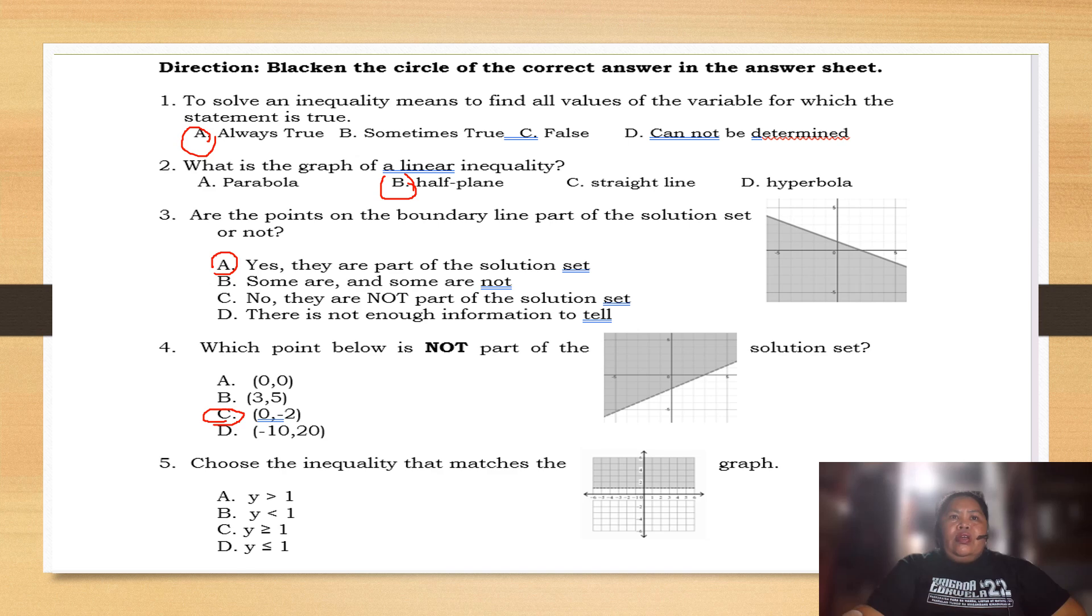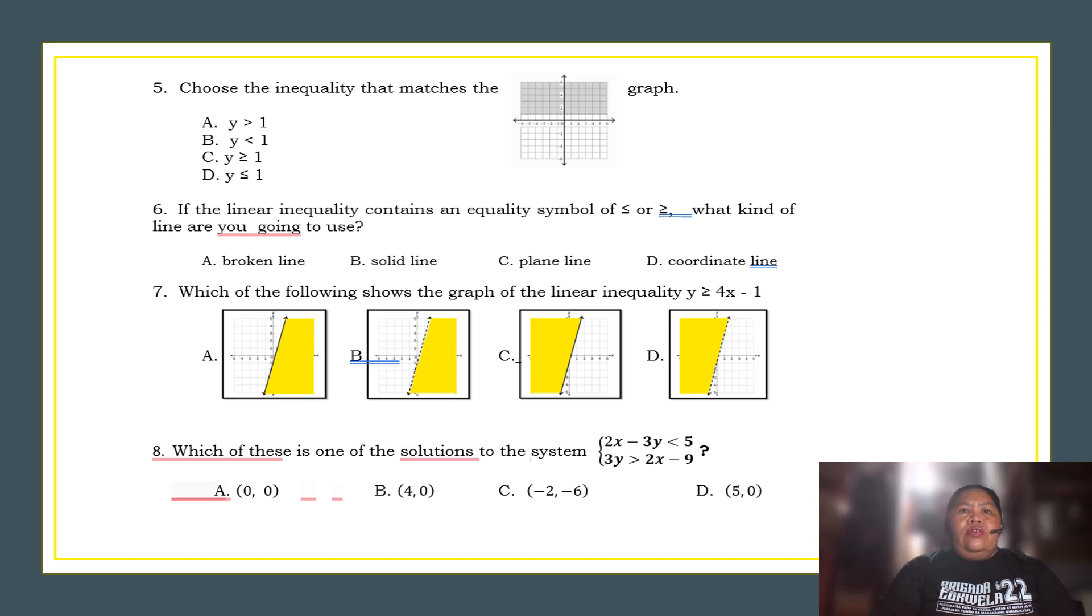Number five. Choose the inequality that matches the graph. So, if you examine this, the answer is either equal to or greater than. So, the possible answer is letter C. So, if you are going to consider here, we have here half plane going up. So, if you are going to examine that, the possible answer is letter C.